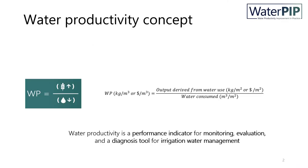We start with a short recap of the concept of water productivity, which is defined as the output derived from the use of water. This can be in terms of biophysical quantities, such as tons or kilograms of biomass or yield, or socio-economic indicators such as jobs or economic value, divided by the water consumption per unit of output. For agriculture performance assessments, the output derived is related to crop production and then referred to as crop water productivity.